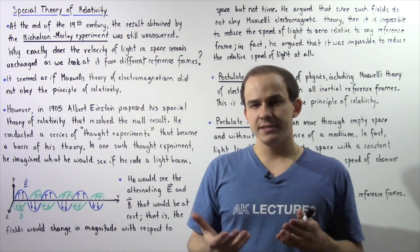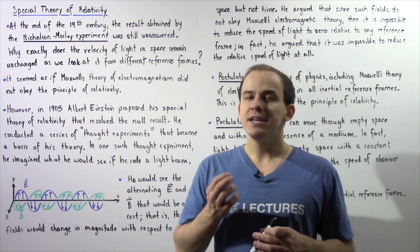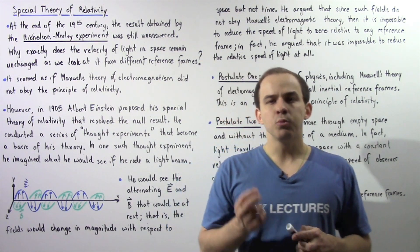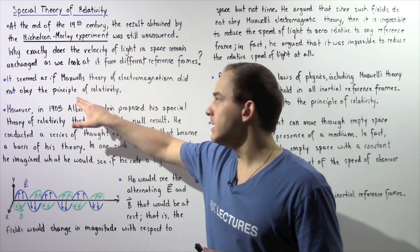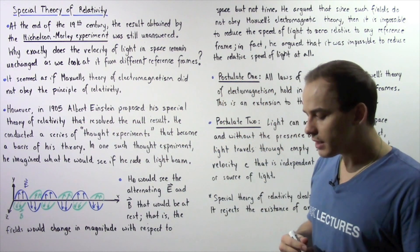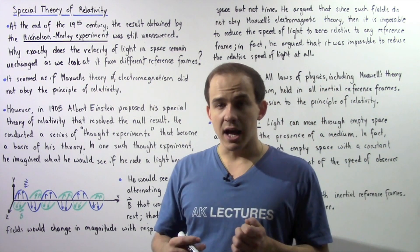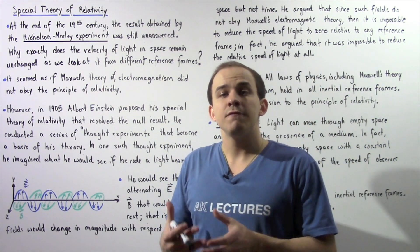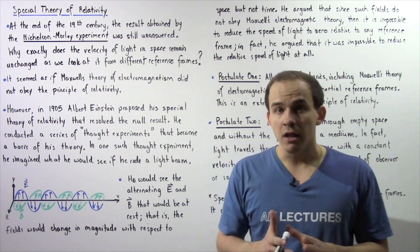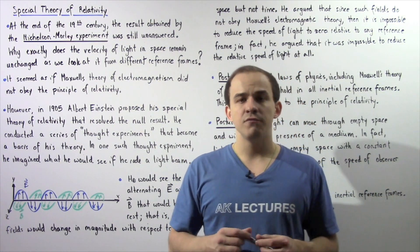It seemed as if Maxwell's theory of electromagnetism did not quite obey the principle of relativity as discussed by Newton and Galileo. However, in 1905, Albert Einstein resolved these problems. He resolved the null result using his special theory of relativity.